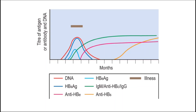Hepatitis B surface antibody is used to document recovery and/or immunity to hepatitis B virus infection. Anti-hepatitis B core IgM is a marker for acute infection, while anti-hepatitis B core antigen IgG is an indication of past or chronic infection. The hepatitis B E antigen — the envelope antigen — indicates active replication of the virus and therefore infectiousness. Anti-hepatitis B E indicates the virus is no longer replicating; however, the patient can still be positive for hepatitis B surface antigen, which is made by the integrated hepatitis B virus.